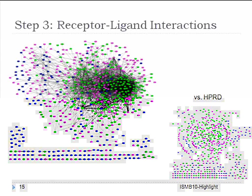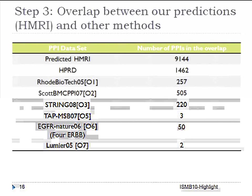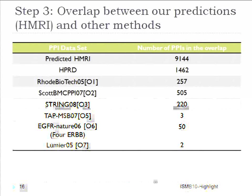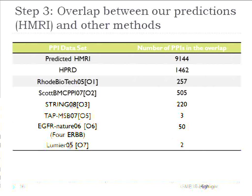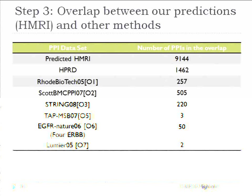We also compared the overlap between our predictions and other methods. Our graph has around 9,000 predicted edges, with about 1,500 already in HPRD. A 2005 paper using a probabilistic model to predict general human protein-protein interactions has about 257 overlaps with ours; a 2007 paper has around 500 overlaps; STRING has 200 overlaps. A Nature 2006 paper with experimental data specifically for four ErbB receptors: out of 180 interaction pairs, 50 are recovered in our predictions — and we did not use this as training data.